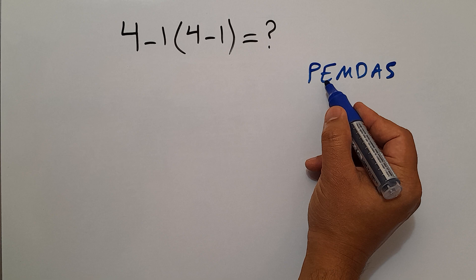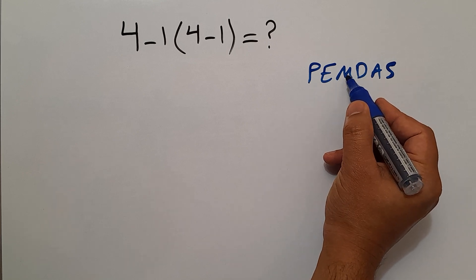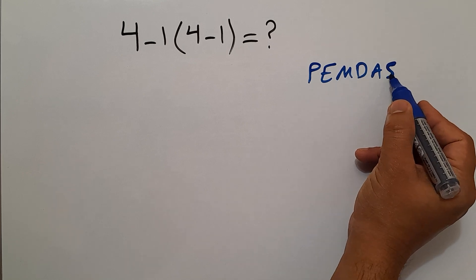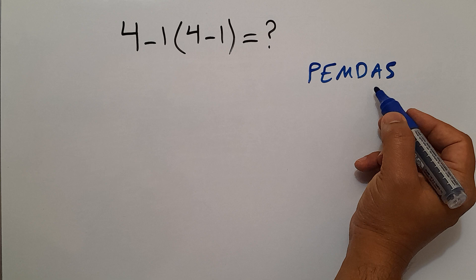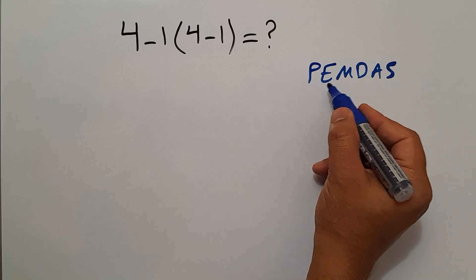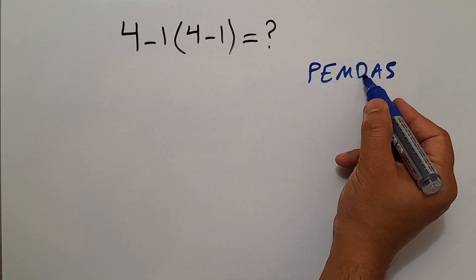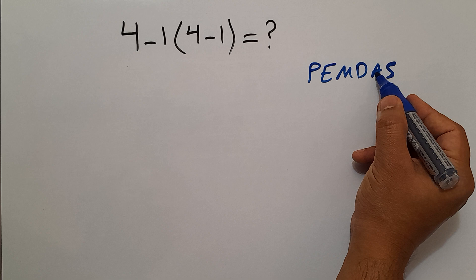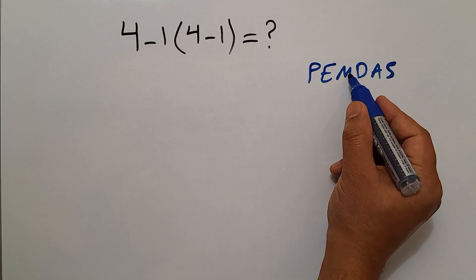E stands for exponents, M and D stands for multiplication and division, and A and S stands for addition and subtraction. We do first parentheses, then exponents, then multiplication and division, and finally addition and subtraction.